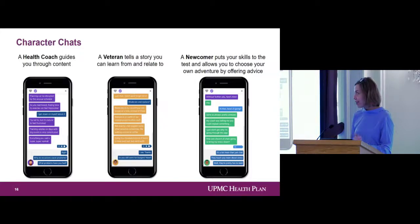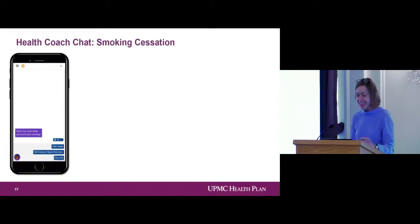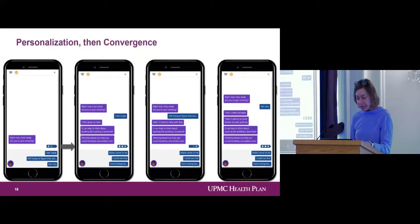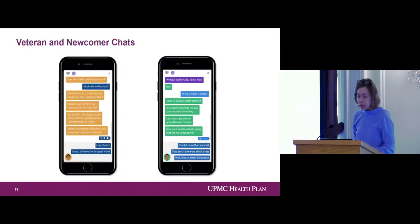There are three characters in Odyssey that users chat with. The first character is a health coach that users meet pretty early on who guides them through a lot of the programmatic content. We also have a veteran character, which represents a person who's farther along in the program than they are and can offer some guidance. And finally, once you're about halfway through the program, you begin to have the opportunity to chat with a character we call a newcomer, who's someone earlier in the program experience than you are. I'm going to show you a chat between a coach and a user. How am I doing? How fast do I have to be?